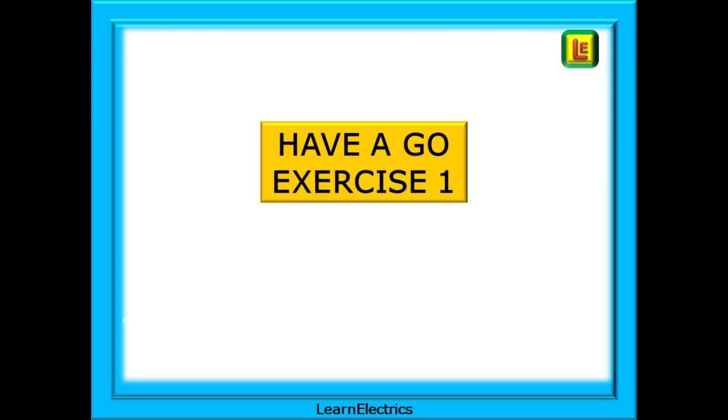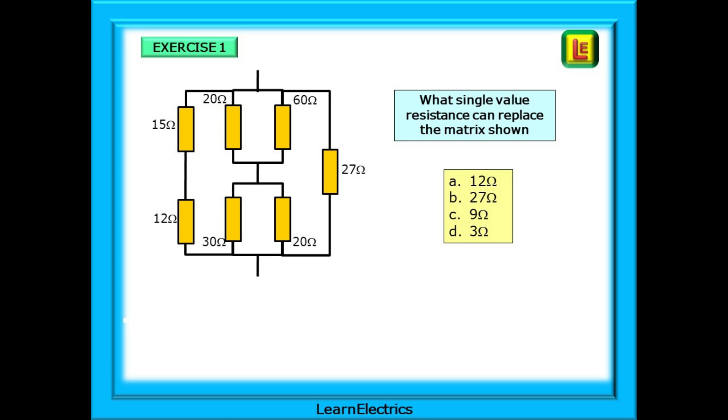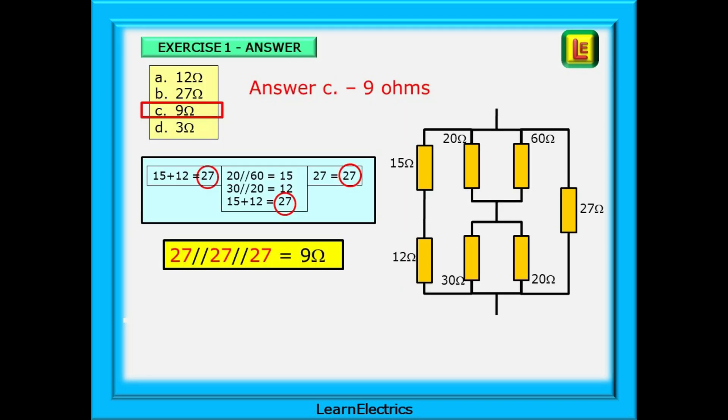It's over to you now. Have a go at these two exercises. The first one is exactly the same layout as we have just worked through but with different numbers. What single value resistance can replace the matrix shown here? You should choose one answer from the four choices offered. Pause the video and calculate your answer before looking at the next slide. Your answer should match one of the choices offered. You should have 9 ohms as your answer, choice C.